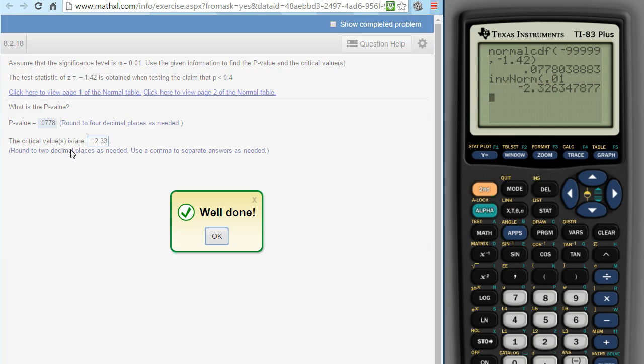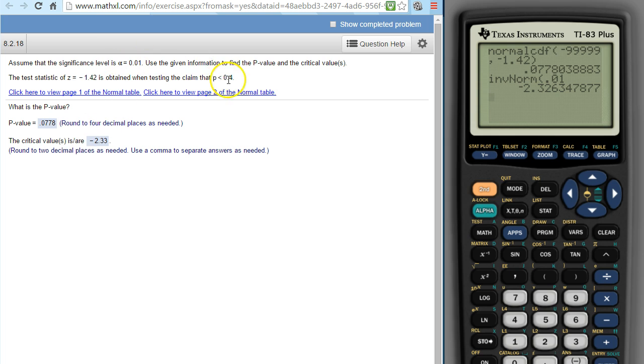That's because this is saying less than. If it said not equal to, we would have had to divide that 0.01 by 2 and use the positive and negative version of this number. That's for a two-tailed test, but this is a one-tailed test because that's a strictly less than. If it had been not equal to, I would have had to divide by 2.